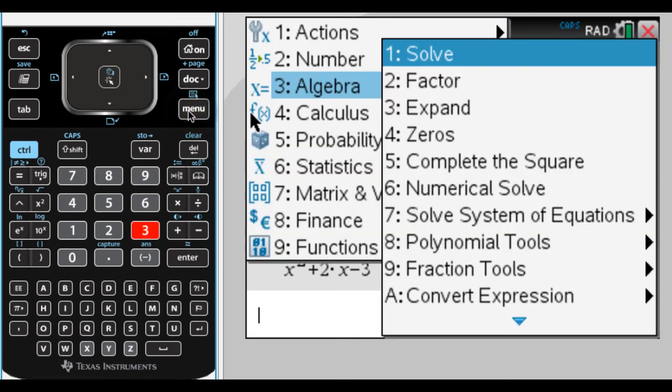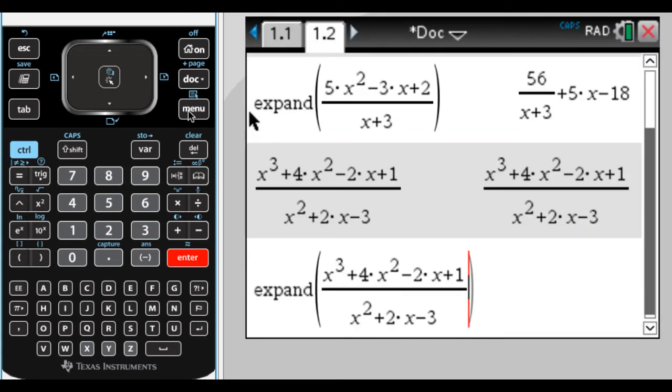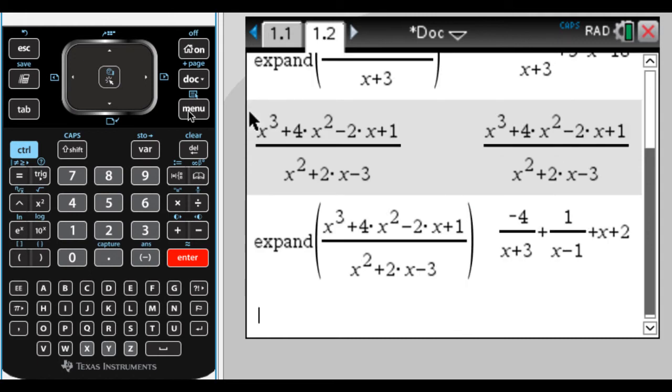So instead, I'm going to press menu, three, and then three. So that's menu, algebra, expand, and go up and get this, and press enter. And this doesn't give me what I would have gotten by hand. The calculator did something called partial fraction decomposition. And what I want to do now is take this remainder that doesn't look like what I would have gotten by hand and turn it into what I would have gotten.